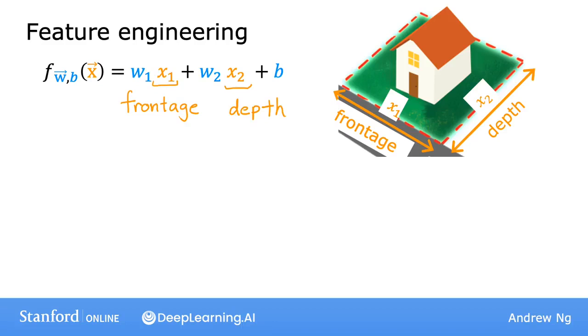But here's another option for how you might choose a different way to use these features in the model that could be even more effective. You might notice that the area of the land can be calculated as the frontage or width times the depth. And you may have an intuition that the area of the land is more predictive of the price than the frontage and depth as separate features. So you might define a new feature, x3, as x1 times x2. So this new feature x3 is equal to the area of the plot of land.